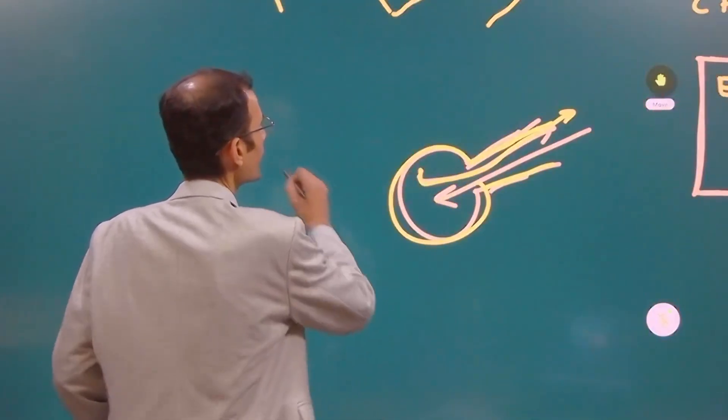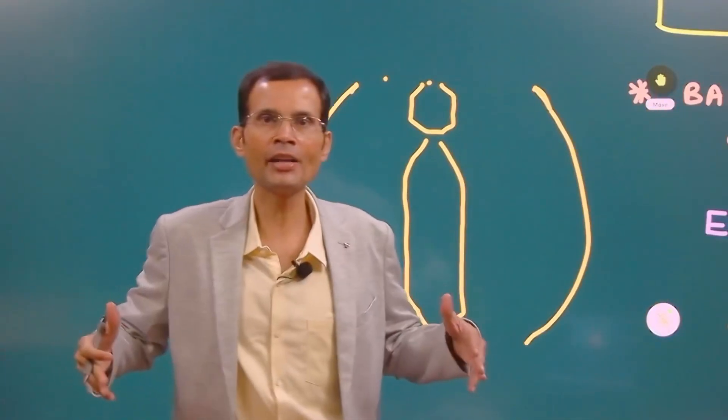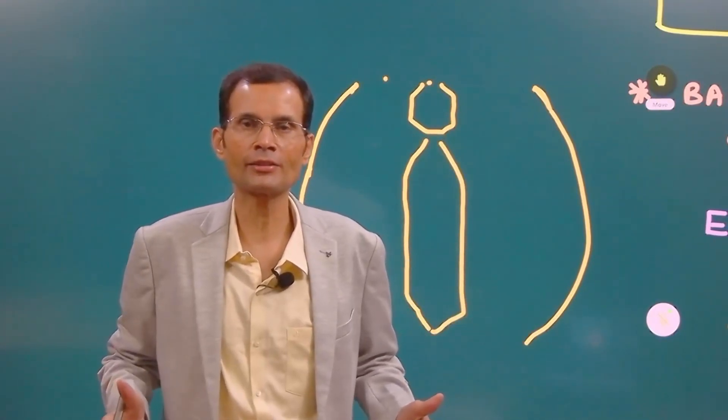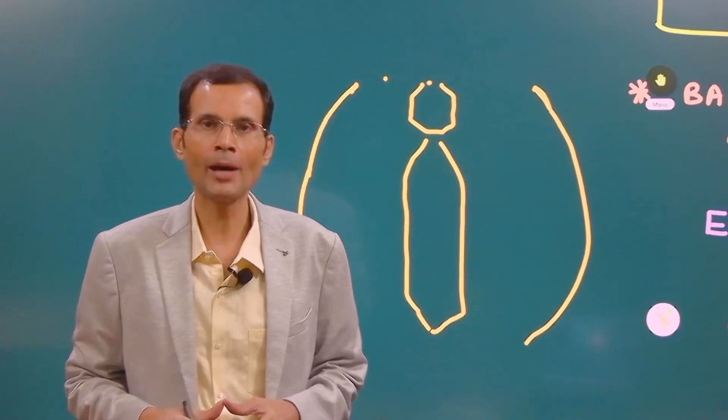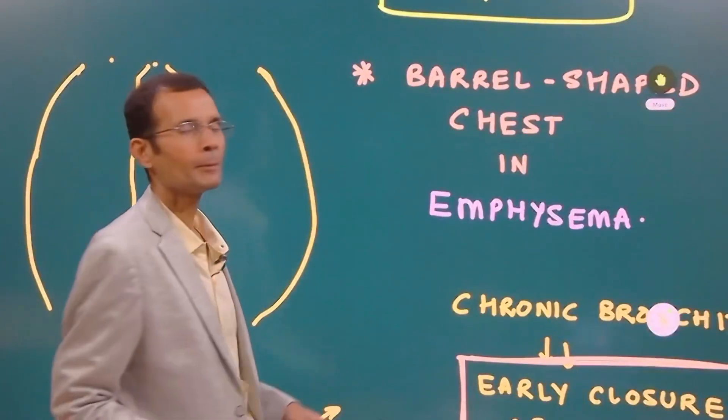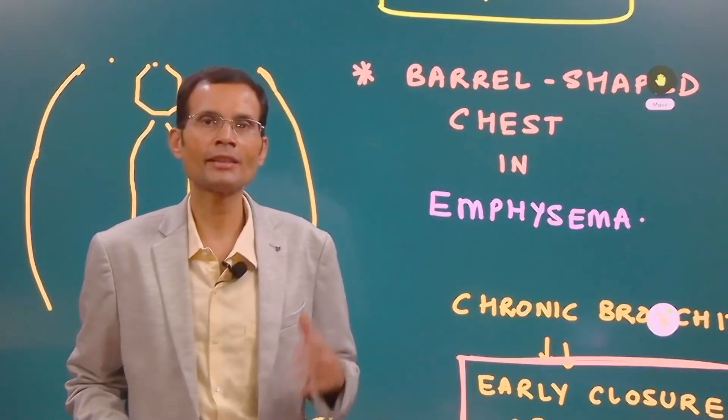If you can see just diagrammatically it's quite distended lungs and therefore a barrel shaped chest. You have to imagine a wooden barrel and then that's the reasoning behind the barrel shaped chest in emphysema.